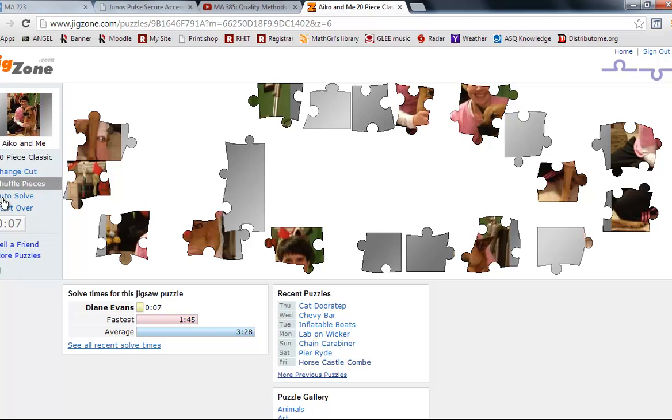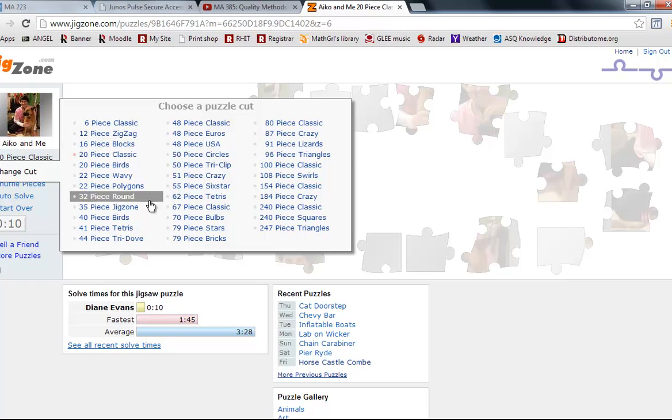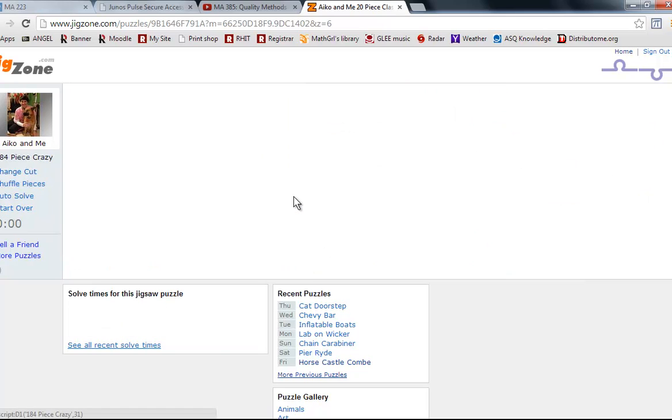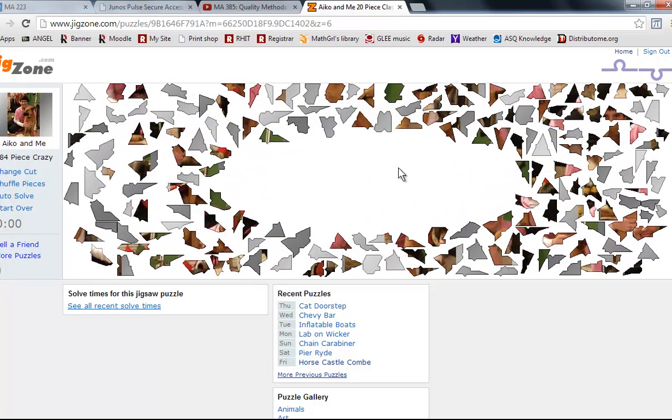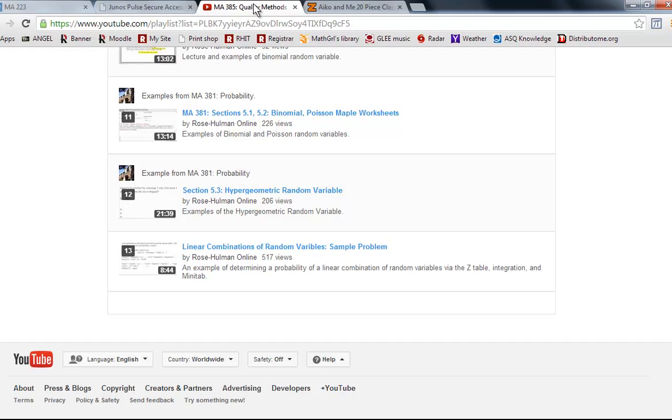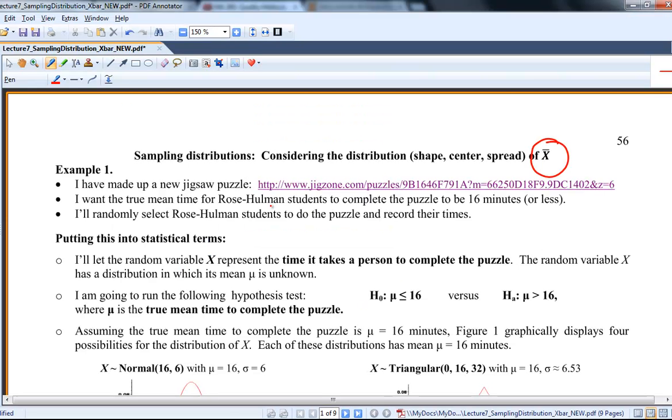You might think, oh, this is going to take me less than 16 minutes, but I can change it to crazy shapes. Let's do 184 crazy pieces. Yeah, and I think that would take you at least 16 minutes. So imagine, I mean, the premise of this is I made a crossword, and I want to see if the true mean time for people to do the crossword is 16 minutes. And I'm assuming the true mean time if I took every single person at Rose-Hulman and had them do the puzzle. So let's go back to this. So that's the premise. I have an activity, and what I'm trying to do is see if the true mean time of everybody, if I took everybody at the school, mu would be 16. So is mu 16, or do I have evidence that mu would be bigger than 16?